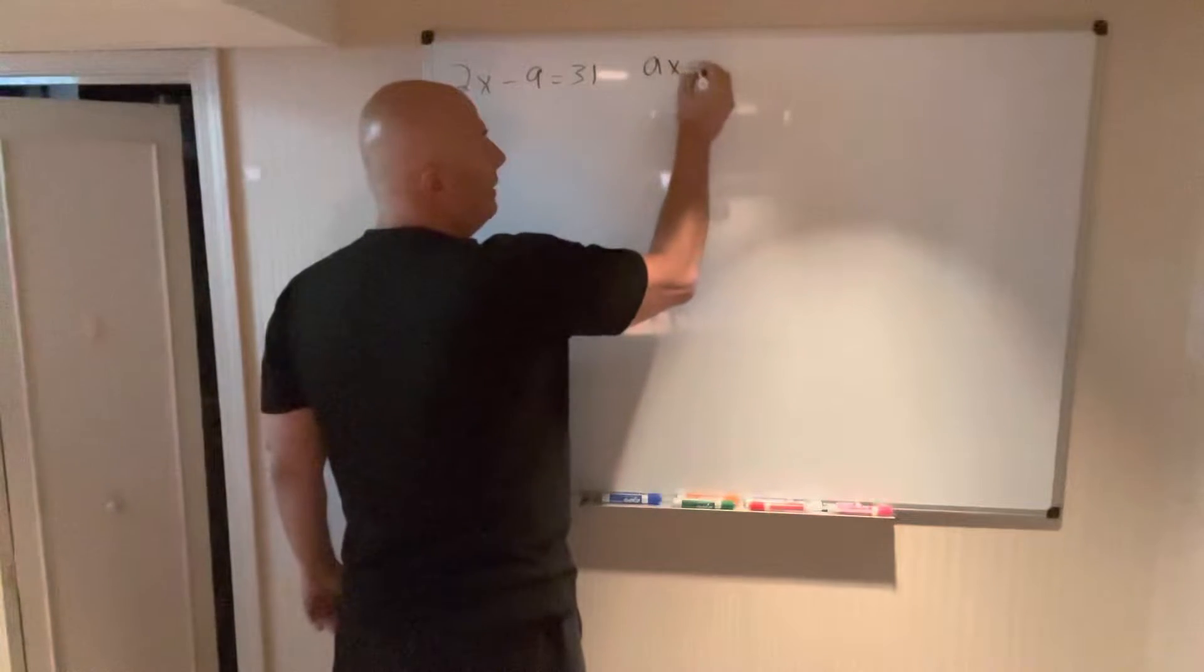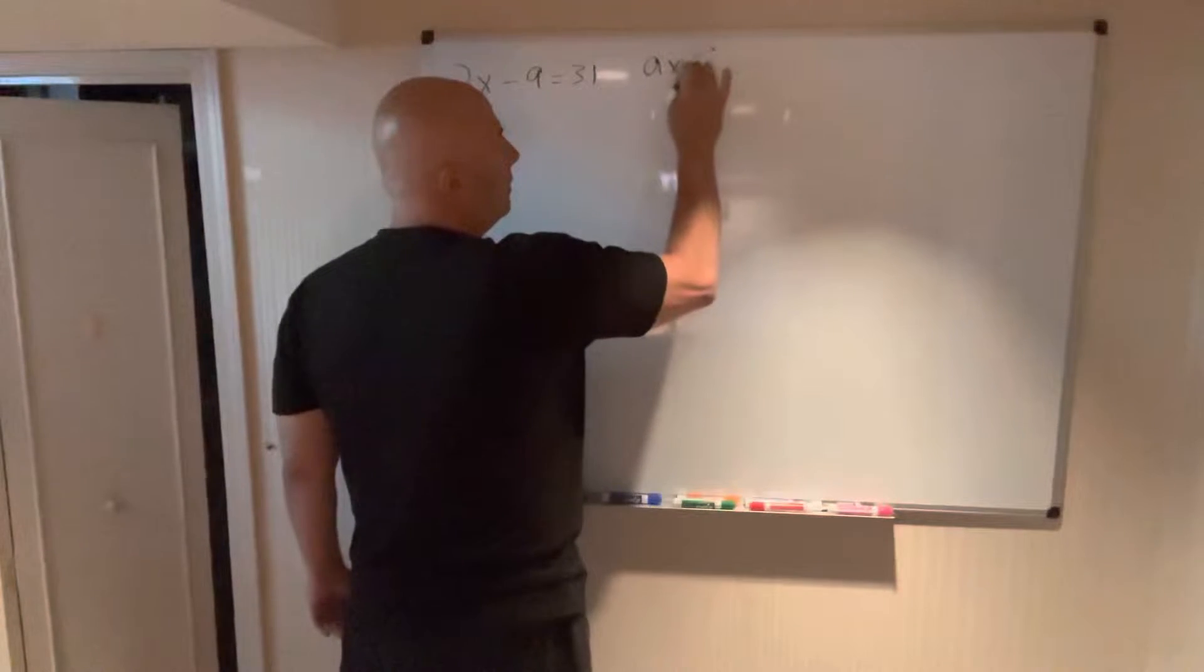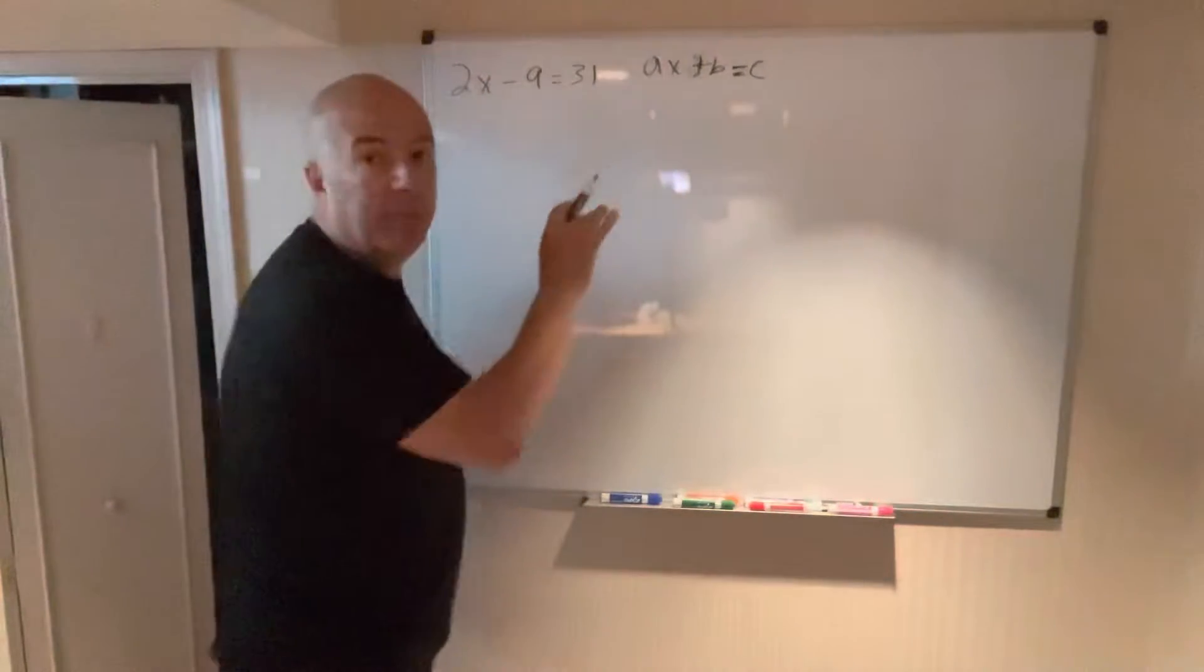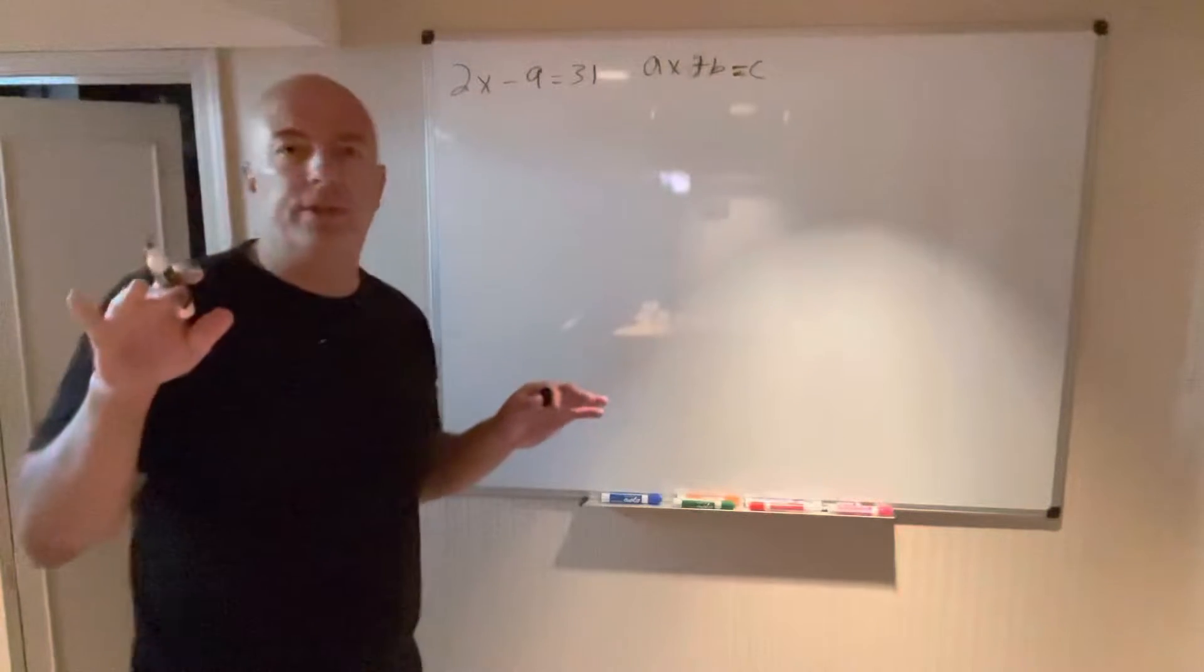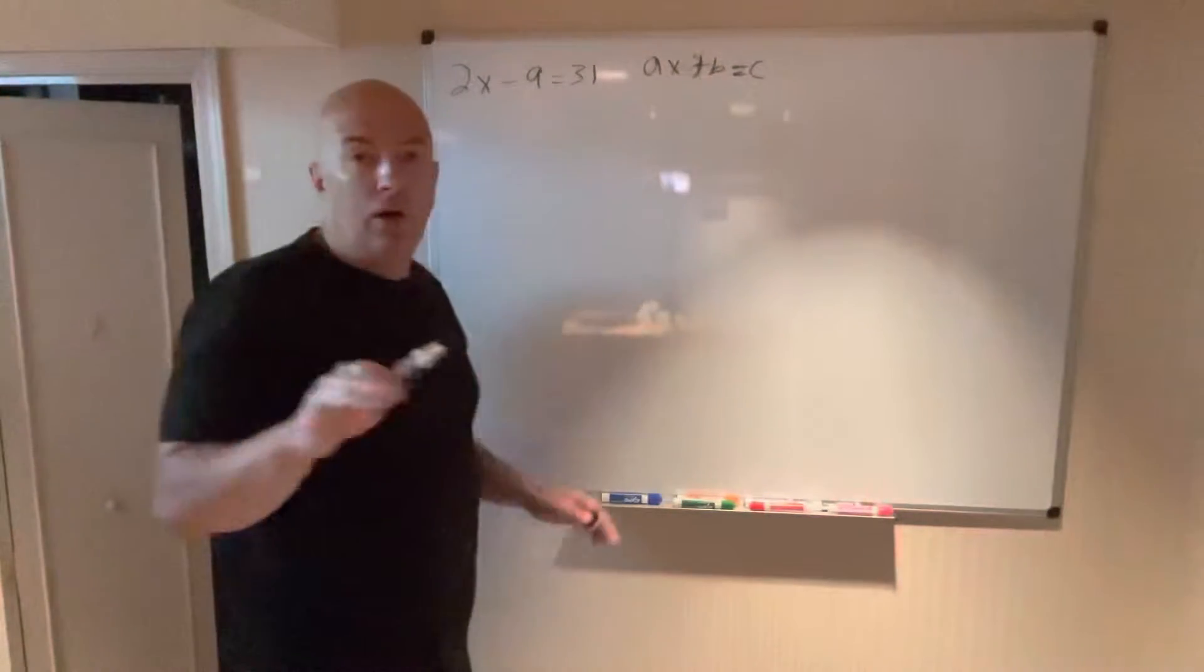So it goes like this: ax plus b equals c. X can be any variable a through z excluding e and i because those are specially reserved letters. a, b, and c are all numbers.